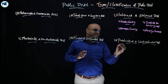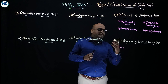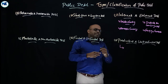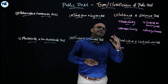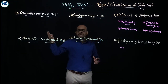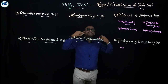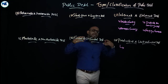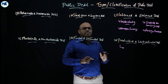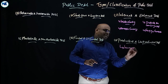Another classification is productive and unproductive debt. Productive debt means the government mobilizes a loan and utilizes the fund for productive purposes — that is, for income-generating areas.